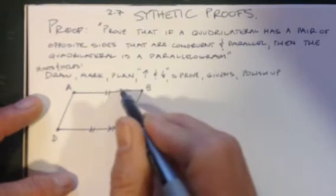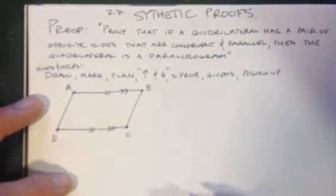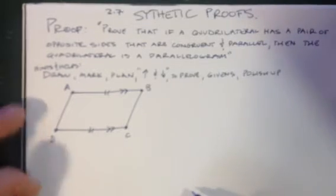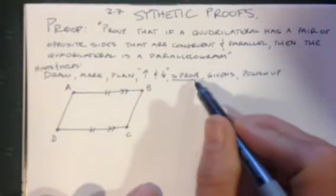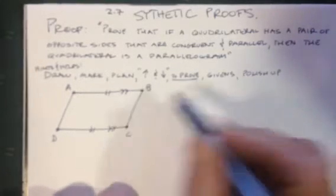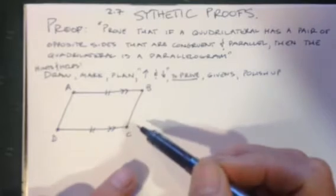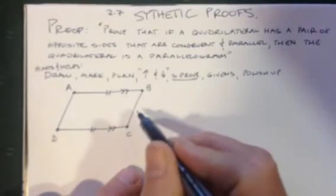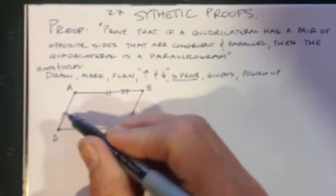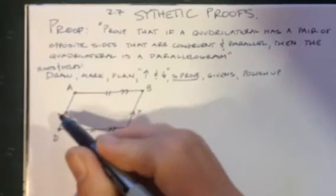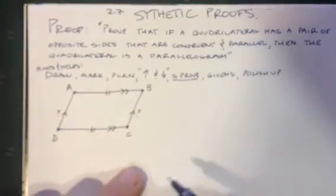And remember, parallel is different from being congruent. So I really need two sets of marks there like that. Now, what am I trying to show? Well, I'm trying to show, I'm trying to be really clear about the to prove part, that I'm trying to prove that this is a parallelogram. Well, you need to know your definitions. To prove that, I want to show that this is parallel to this. And I'm always going to put a question mark by the thing that I don't know but I'm trying to show.